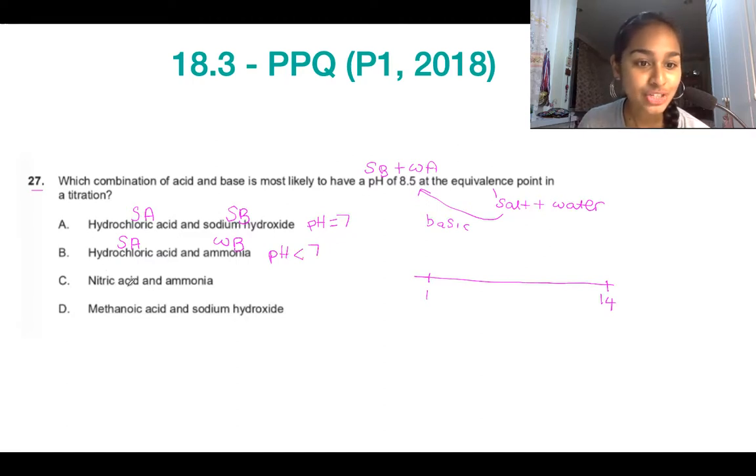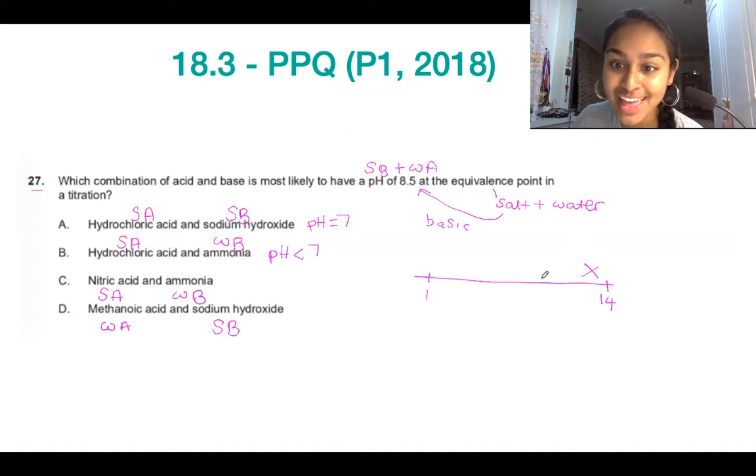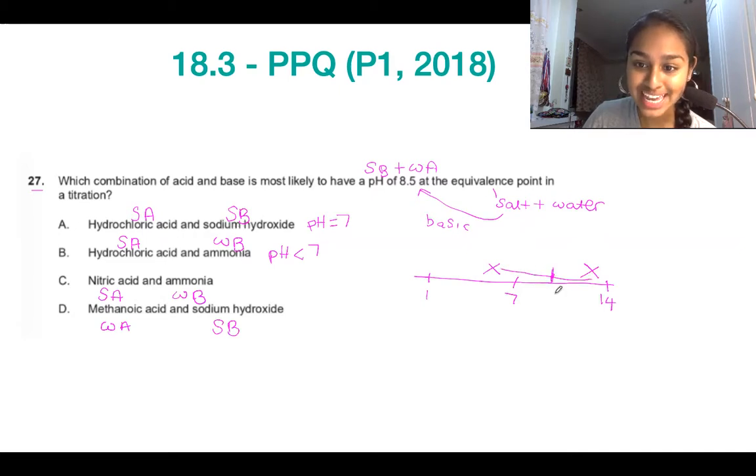Next, nitric acid and ammonia is also going to be a strong acid and a weak base as per option B. Last, methanoic acid is going to be a weak acid plus sodium hydroxide, a strong base. Here, the sodium hydroxide is going to be stronger. Sodium hydroxide is going to have a really high pH. Methanoic acid is going to not be very acidic, so it's going to have a pH quite close to 7. And that middle point is going to be somewhere over here, which is going to be a pH of more than 7. So our option is D.